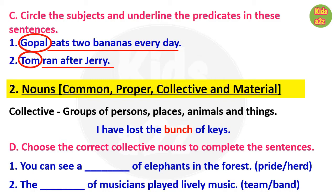For the question on collective nouns, kids need to choose the correct collective noun to complete the sentences. First one: 'You can see a herd of elephants in the forest.' For the second one: 'The band of musicians played lively music.'